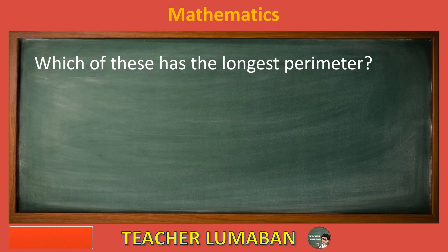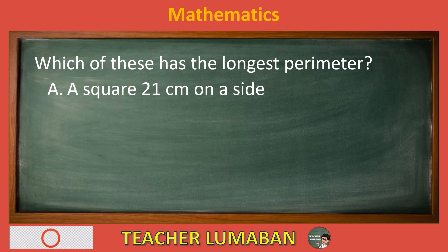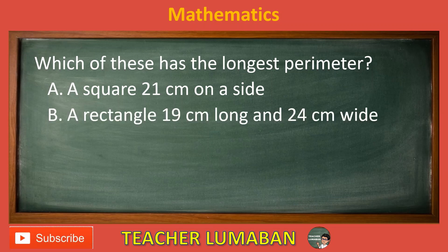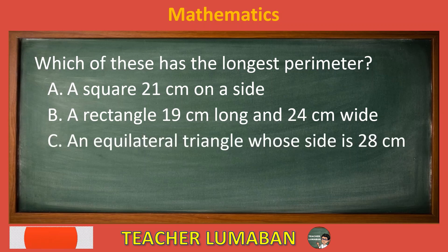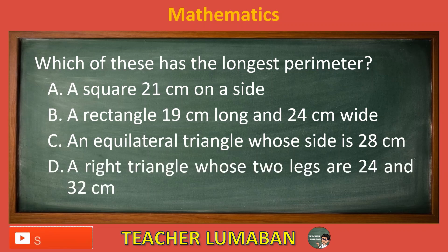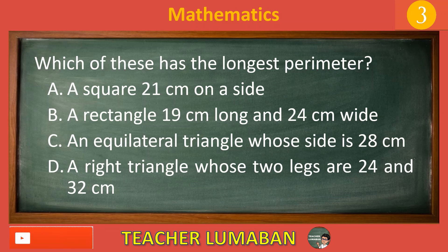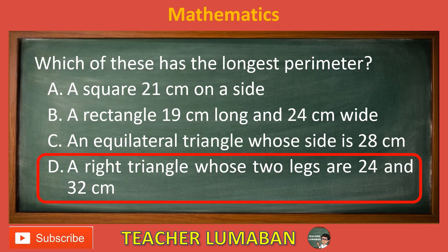Which of these has the longest perimeter? Letter A: a square 21 centimeters on a side. Letter B: a rectangle 19 centimeters long and 24 centimeters wide. Letter C: an equilateral triangle whose side is 28 centimeters. Letter D: a right triangle whose two legs are 24 and 32 centimeters. The correct answer is Letter D: a right triangle whose two legs are 24 and 32 centimeters has the longest perimeter.